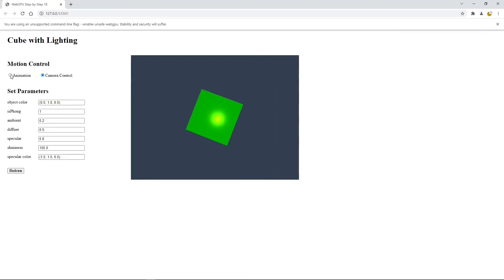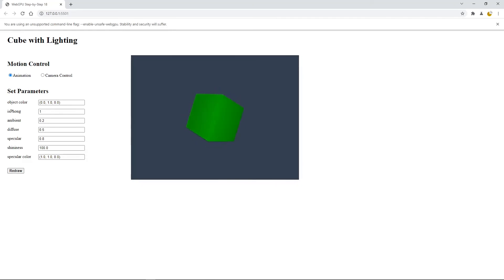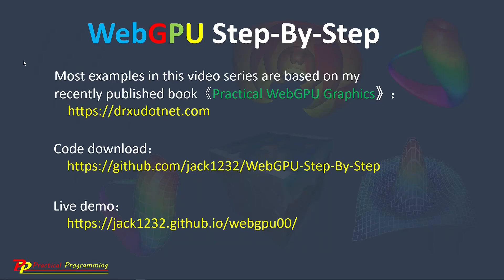You can click animation to make the cube animate automatically. Now we have completed this example. In the next video, I will show you how to create a sphere with lighting effect. Most of the examples presented in this video series are based on my recently published book, Practical WebGPU Graphics. From this link, drsu.net.com, you can see the details about this book.